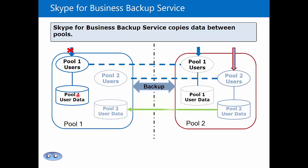I can then run Invoke-CsPoolFailback, bring those Pool 1 users back over to their home pool, and once these users have been established back on their home pool, the backup service will go ahead and start replicating the data back in the opposite direction.